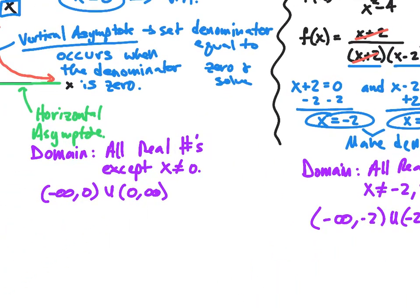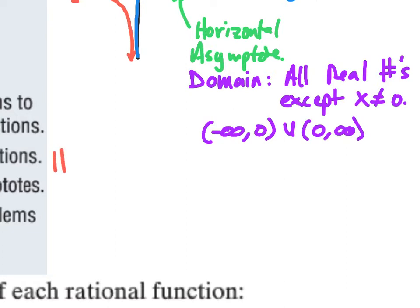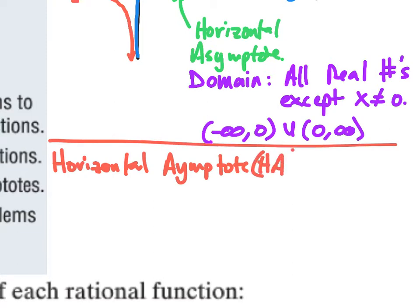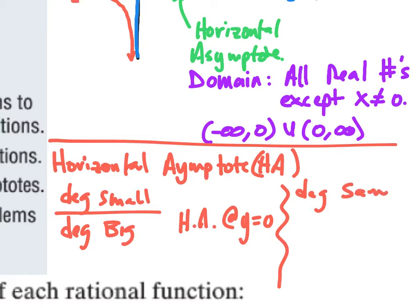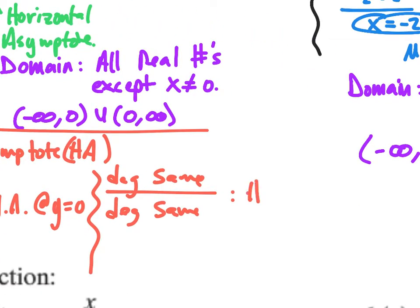Now let's talk about the horizontal asymptote — we've got three options. If the degree in my numerator is small and the degree in my denominator is big, then the horizontal asymptote is at the line y equals zero. If the degree in the numerator is the same as the degree in the denominator, then the horizontal asymptote is going to be the ratio of leading coefficients.